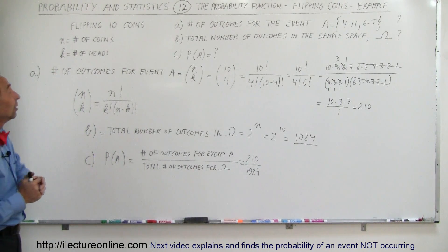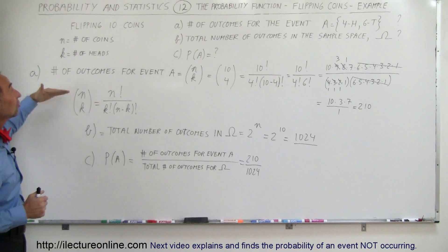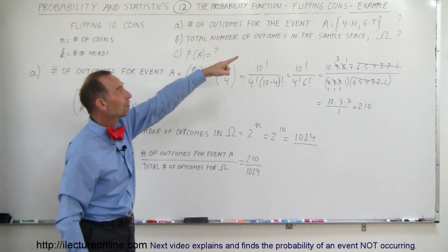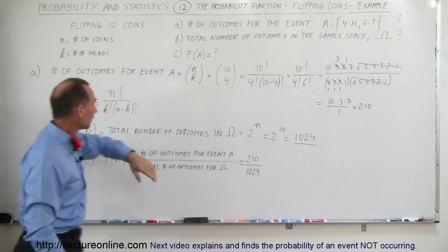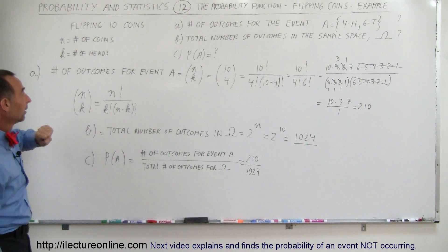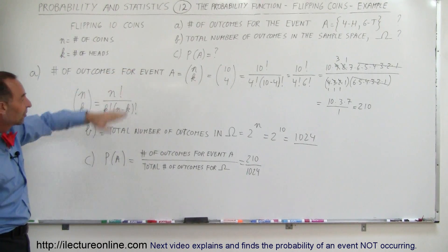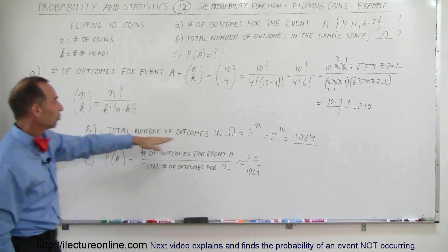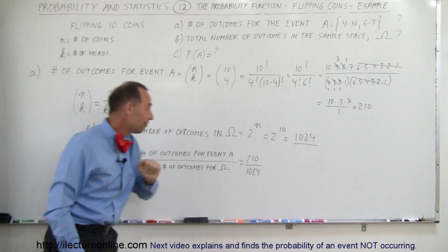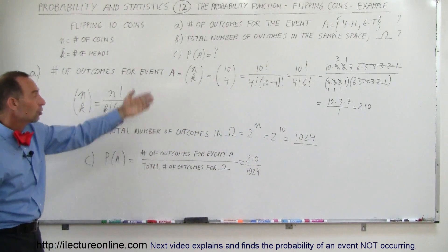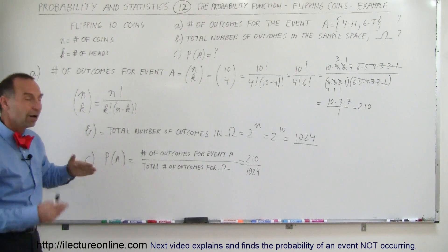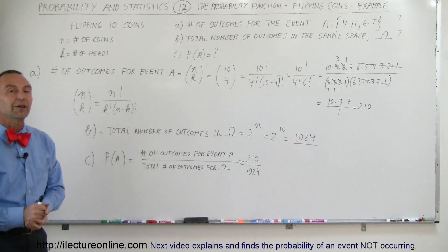And that's how we use probability when we flip coins. The three things you need to remember: first, how to calculate the total number of outcomes for the event using the combinatorial formula; second, the total number of outcomes in the sample space, which is 2 to the power of the number of coins you're flipping; and finally, divide those two numbers to get the probability of that particular event.